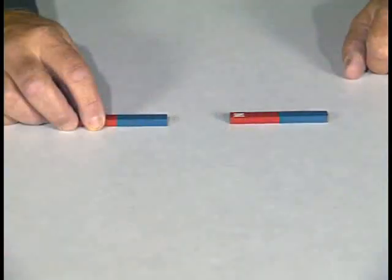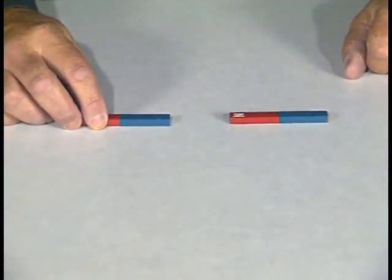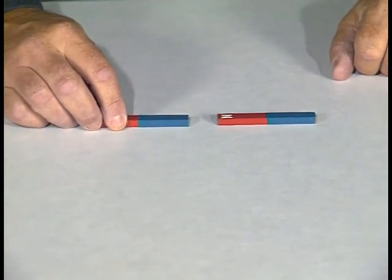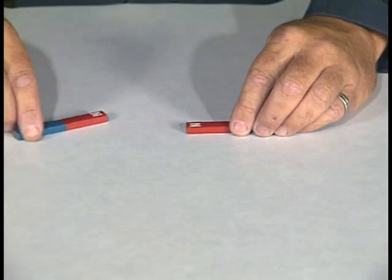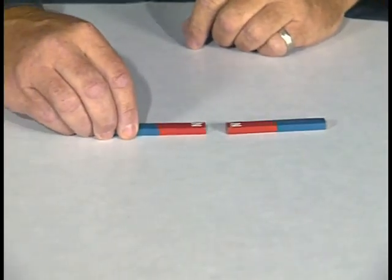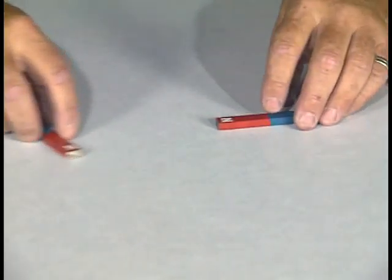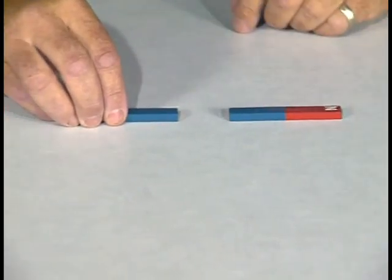The pole of a magnet is the end of the magnet that is attracted to the north or south pole of the earth. If two opposite poles, north and south, are close together, they will attract each other. If two like poles, north and north or south and south, are close together, they will repel each other.